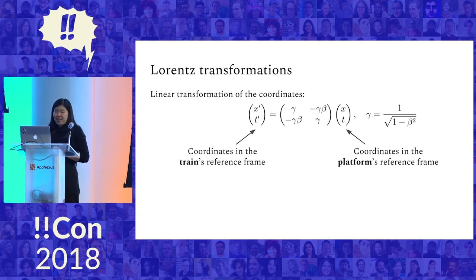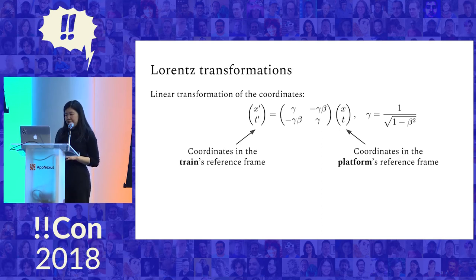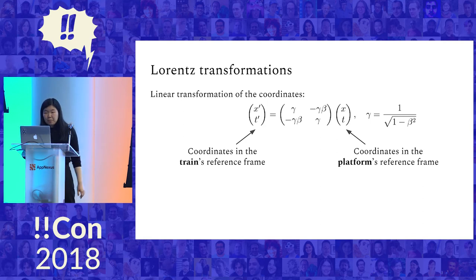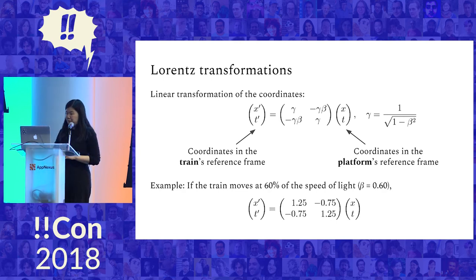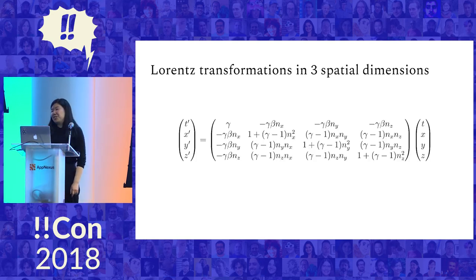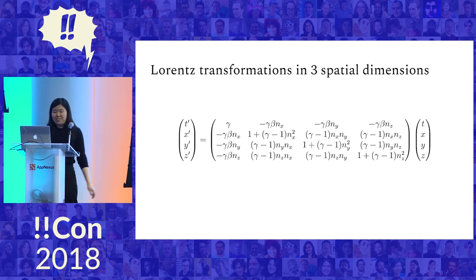Let's make this more quantitative. What I've basically said amounts to the statement that you and your friend on the train have different coordinate systems, and the way you convert between them is something called the Lorentz transformation — a linear transformation of the coordinates. If the train is moving in one spatial dimension x and you also have a time dimension t, this is a two-by-two matrix that defines the coordinate transformation. If the train is moving at 60% of the speed of light — beta equals 0.6 — this is what that matrix looks like. More generally, we live in three spatial dimensions, so the fully general formula gives you a four-by-four matrix with t, x, y, and z.